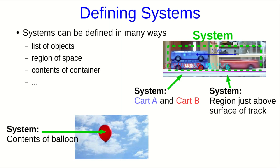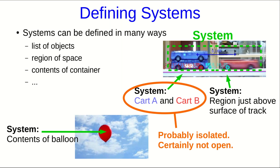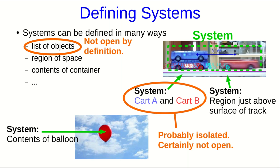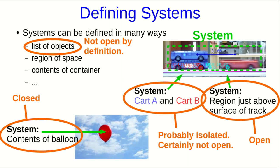Let's return to the ways of defining systems and think about them using that terminology. If we define a system as a list of objects, then it's certainly not open — by definition, there's no matter in or out. In the case of carts, if drag and friction are negligible, this would be isolated, at least approximately; but it could just be closed if friction isn't negligible. A list-of-objects definition is always going to be not open. If we define it as a region with no walls, we'll have an open system — air would be coming in and out. And when we define it as the contents of a container with impermeable walls, we'll have at least a closed system, maybe isolated. But if the container has valves allowing matter in and out, we end up with an open system.